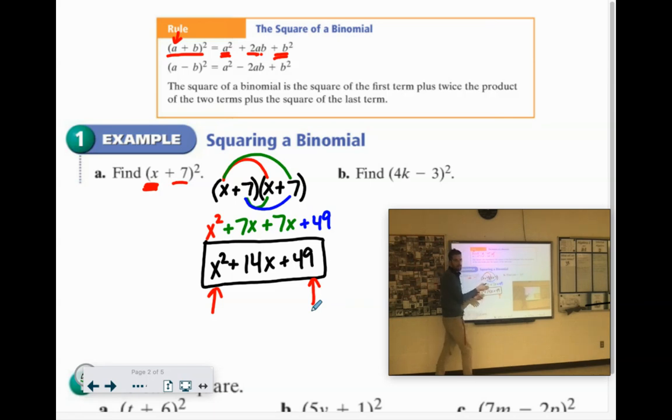X times 7 is 7X, times 2 gives you 14X. And the reason you multiply it by 2 is because we ended up with two of the same things here, two of those 7Xs, and you always will with problems like this.